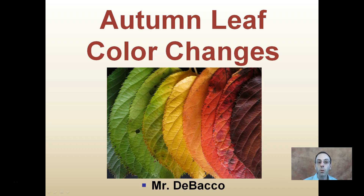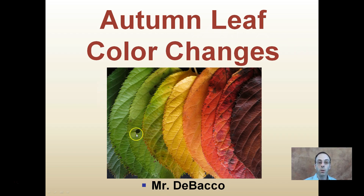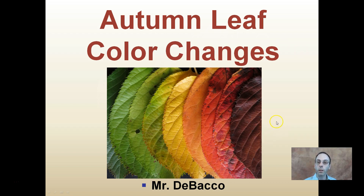In this video I'm going to give a brief overview regarding autumn leaf color changes and how we go from a deep green leaf, slowly over time, to a light green, then to a yellow, to an orange, to a red, to a deep red, and ultimately a brown leaf.